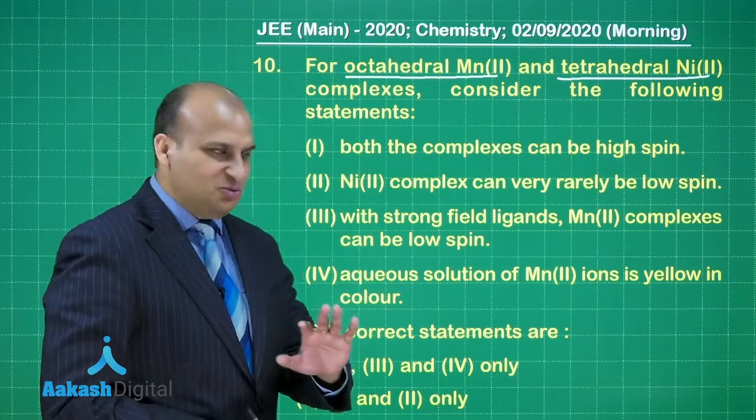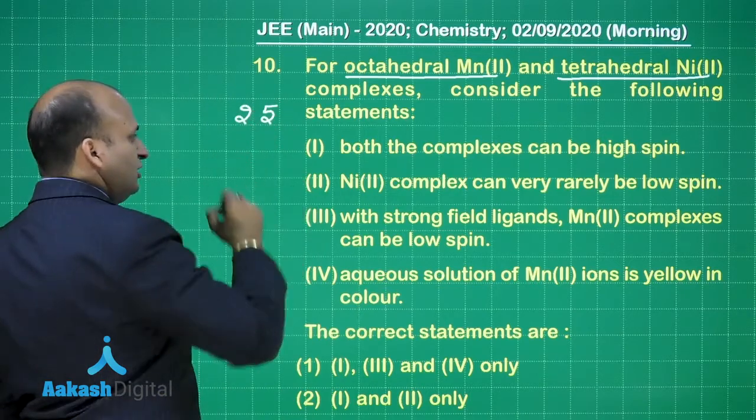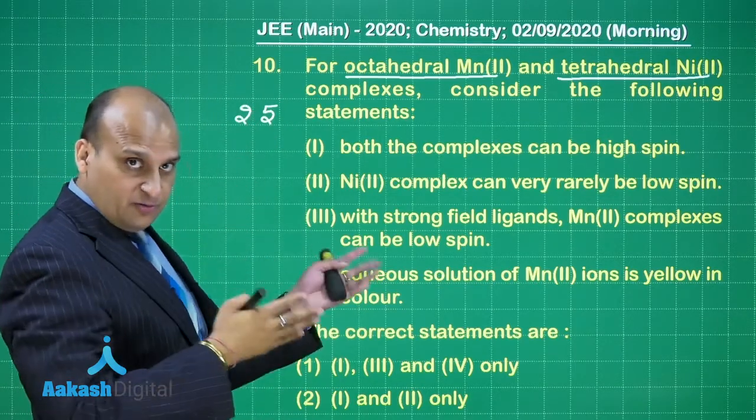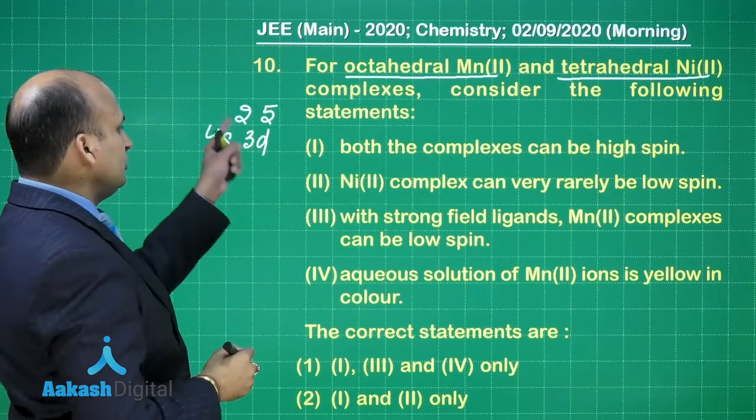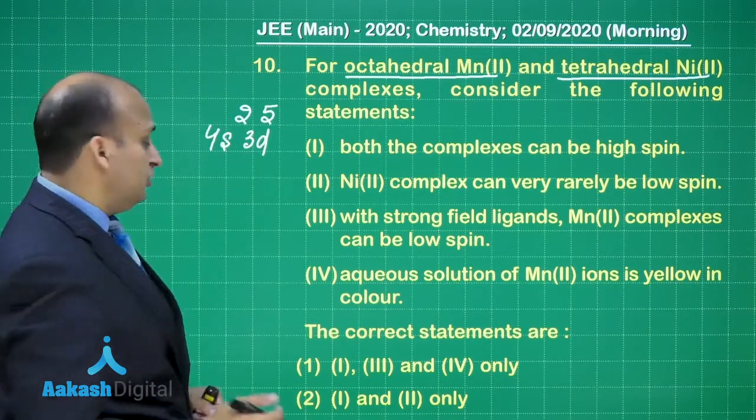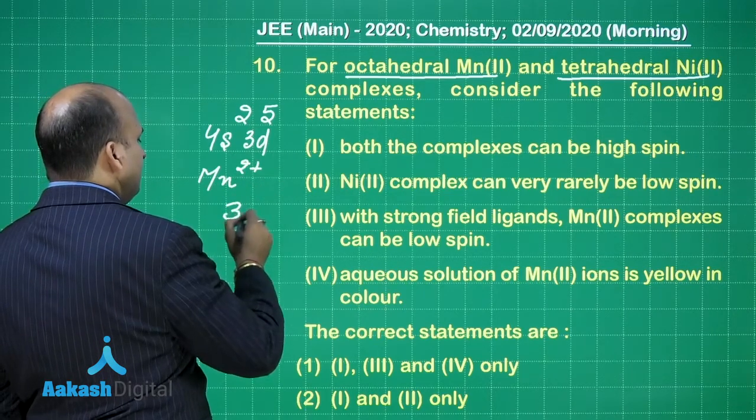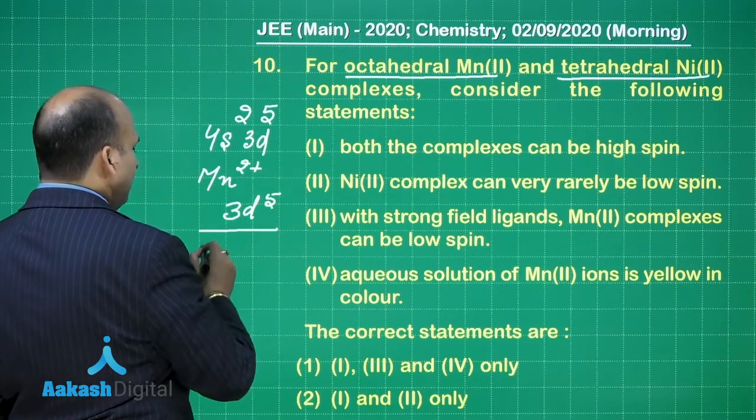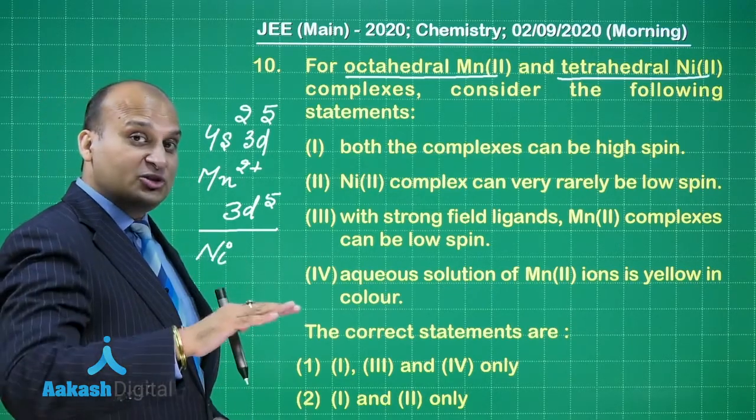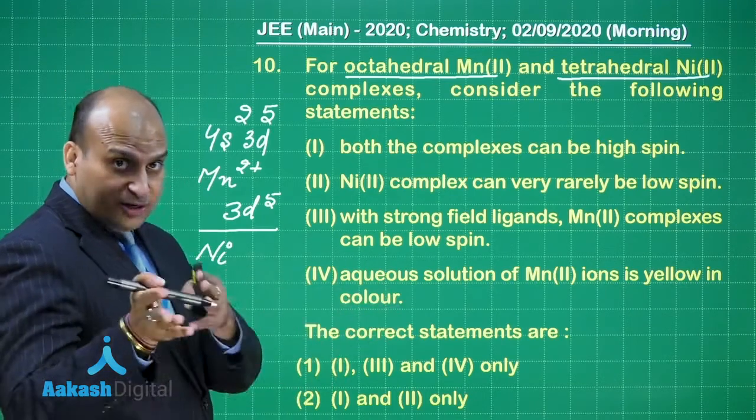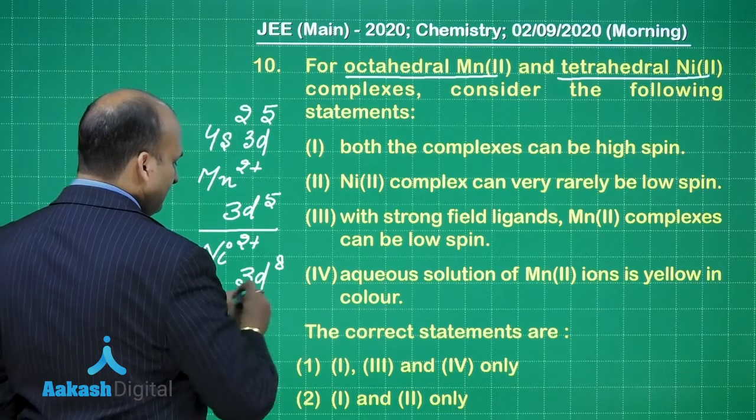It would not take much time, believe me. Manganese atomic number is 25. I am giving the easiest possible way to find the electronic configuration. Simply write 4s over here and 3d over here. So it is 4s2, 3d5 for manganese. When you talk about manganese 2+, it will be 3d5. Similarly, nickel atomic number is 28. So that is 4s2, 3d8. You remove two electrons, it becomes 3d8.